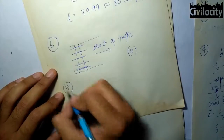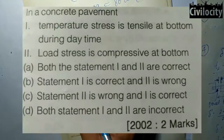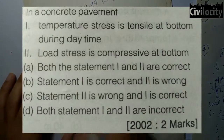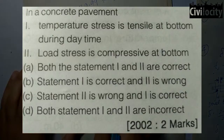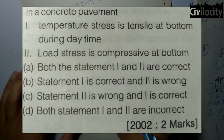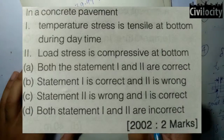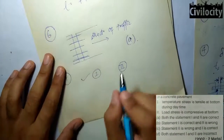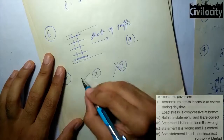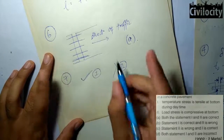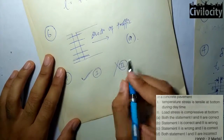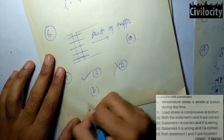This question presents two statements: first, temperature stress is tensile at the bottom during daytime — this is correct. Second, load stress is compressive at the bottom — we know that load stress is not compressive at the bottom during either day or night time, so this is incorrect. Therefore, statement one is correct and statement two is wrong — that is option B.